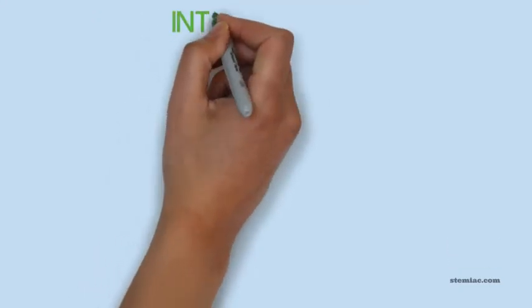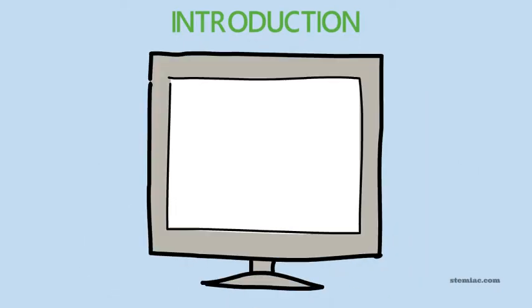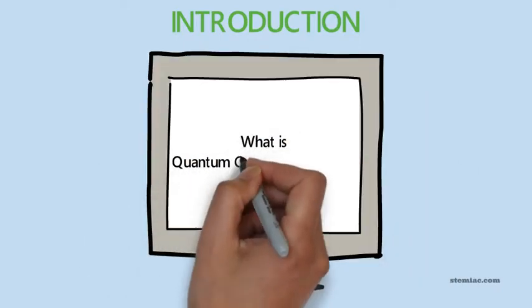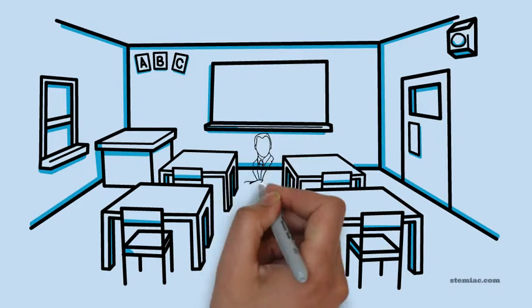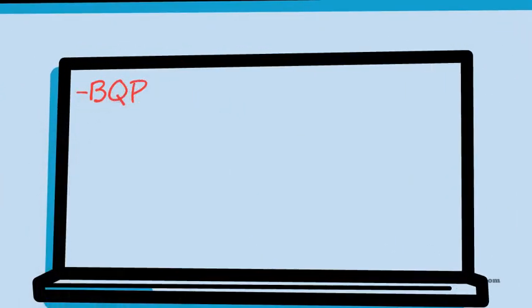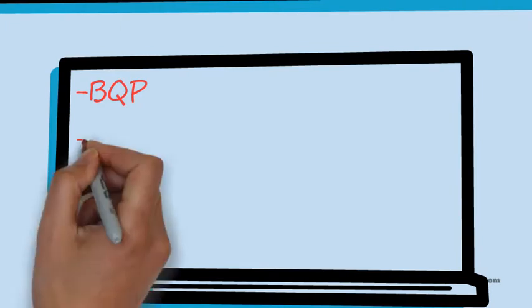The first part will be the introduction. We will start with the introduction to quantum complexity theory by explaining what quantum complexity theory actually is, tell you a few main definitions and present the chapters we are going to cover until the end of the video. So one of the quantum complexity theory terms is BQP. BQP represents solvable decision problems in polynomial time by a quantum computer.